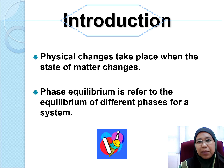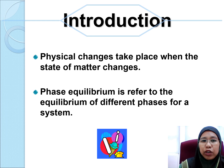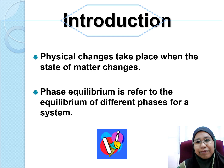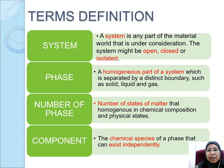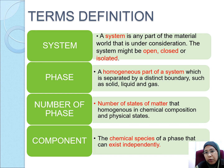Physical changes take place when the state of matter changes. Phase equilibrium is referring to the equilibrium of different phases for a system. A system is any part of the material world that we are talking about. It can be open, closed, or isolated. A phase is a homogenous part of a system which can be separated by a distinct boundary — solid, liquid, or gas. The number of phases refers to the number of states of matter that are homogenous in chemical composition and physical states.